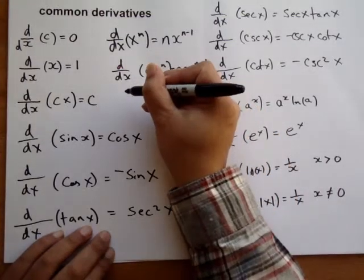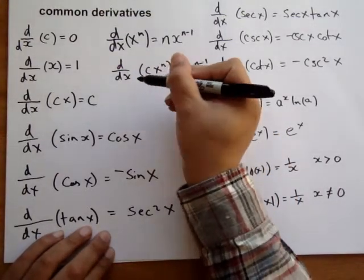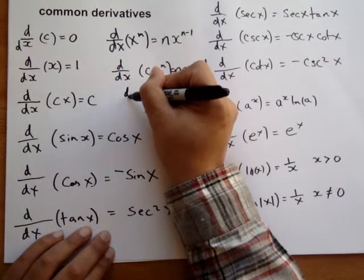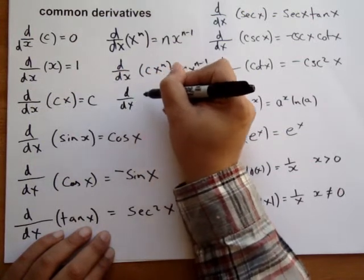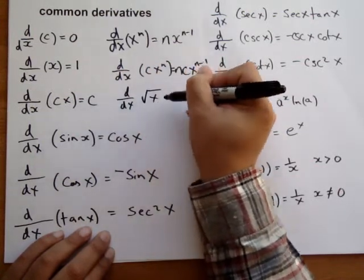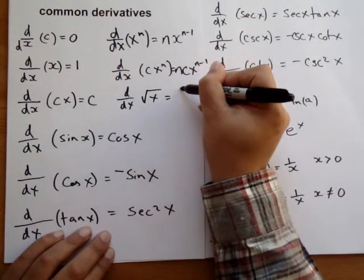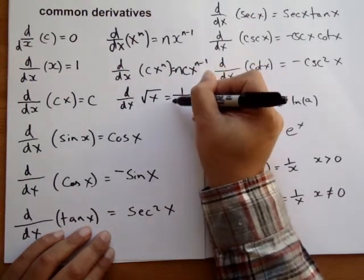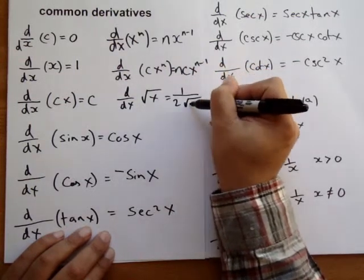A couple of other important ones that you must memorize. The derivative of square root of x is 1 over 2 square root of x.